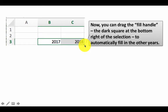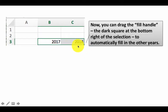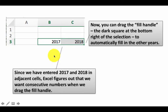Here we are using the fill handle for something slightly different from what we used it for earlier. Earlier, we used the fill handle to copy and paste a formula. Here we have two cells with values, and when you drag the fill handle, Excel is going to figure out the difference between these two values and replicate that difference throughout the entire range. It sees the difference as 1 and as you drag the fill handle it will just keep adding 1. If the difference was 2 it will keep adding 2, if 10 it will keep adding 10. So this is a very convenient way of filling in a uniform sequence across many different cells — it fills out 2017 through 2021 without entering each individually.